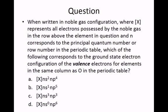When written in noble gas configuration, where [X] represents all electrons possessed by the noble gas in the row above the element in question, and n corresponds to the principal quantum number or row number in the periodic table,